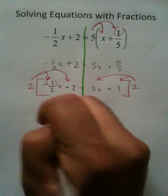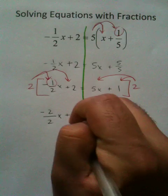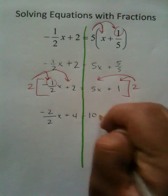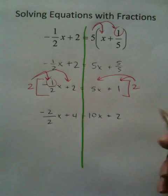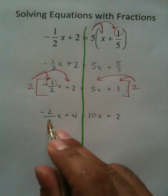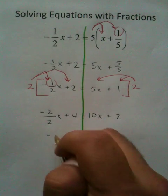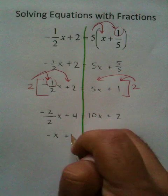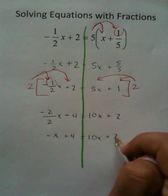This becomes negative 2 over 2x plus 4, which equals 10x plus 2. This negative 2 over 2 turns into negative x plus 4 equals 10x plus 2.